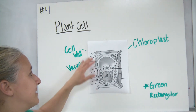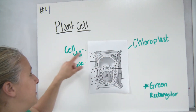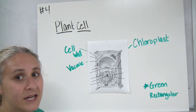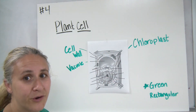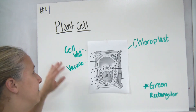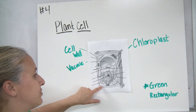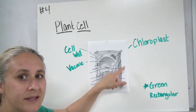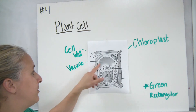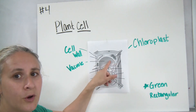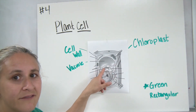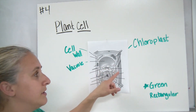You might consider labeling these on the diagram in your note packet. Make sure you label the cell wall, which is just outside the cell membrane, and label the large water-containing vacuole.